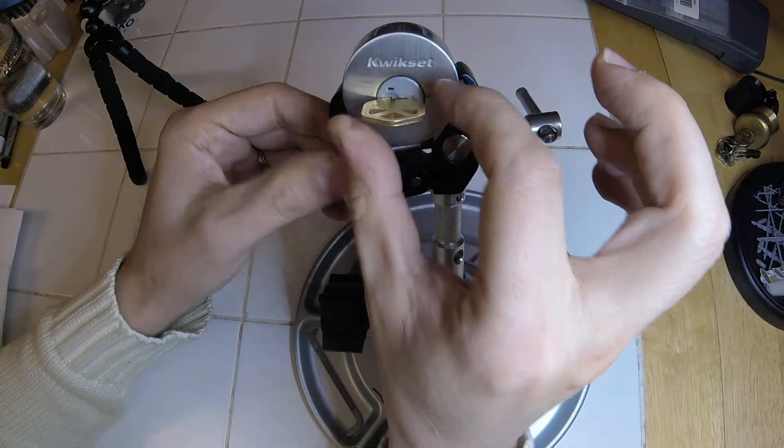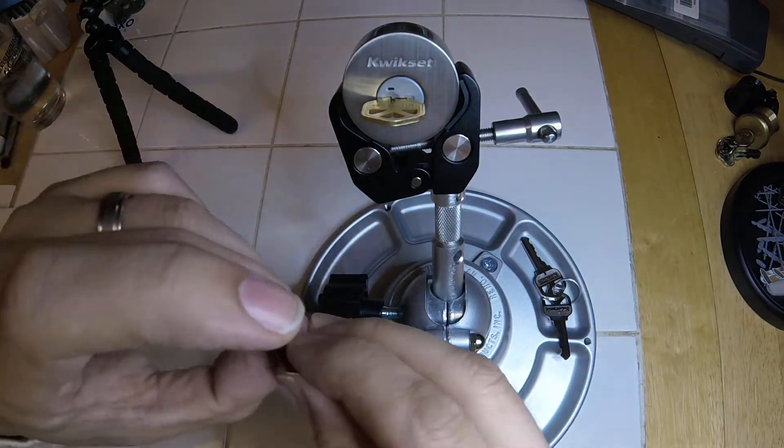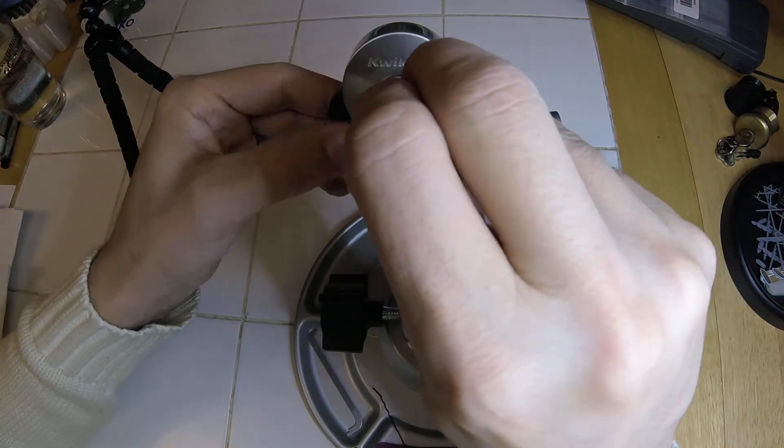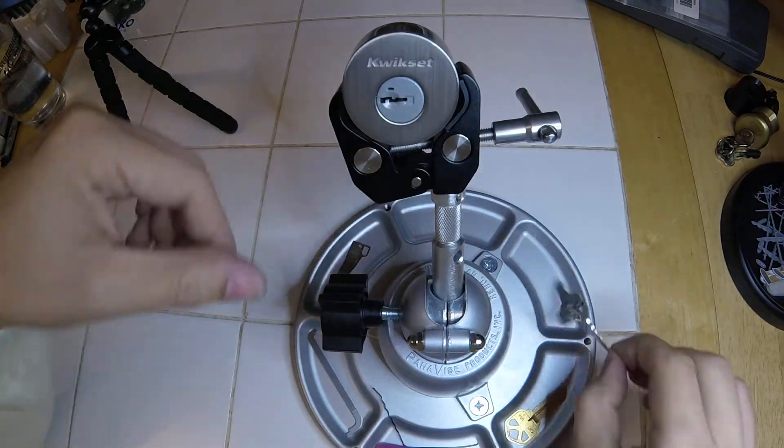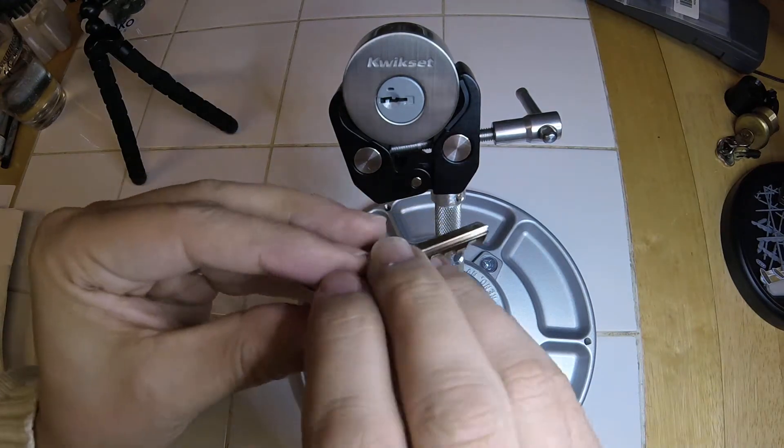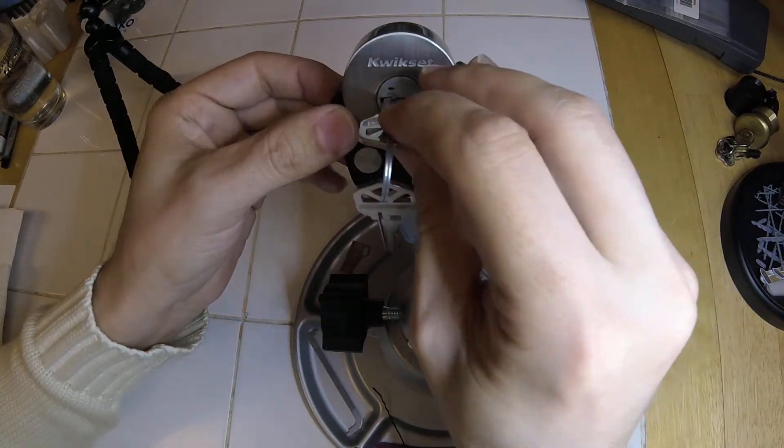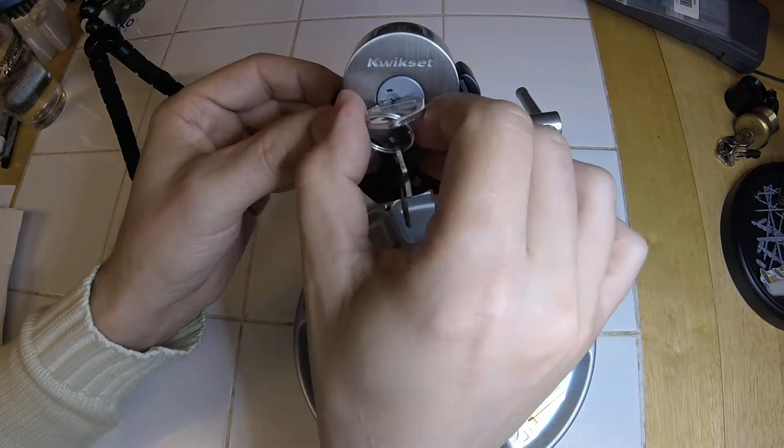What we'll do is turn it nine degrees to the right, put in the tool, pull out that key, stick in this key that came with the Kwikset, and turn it back.